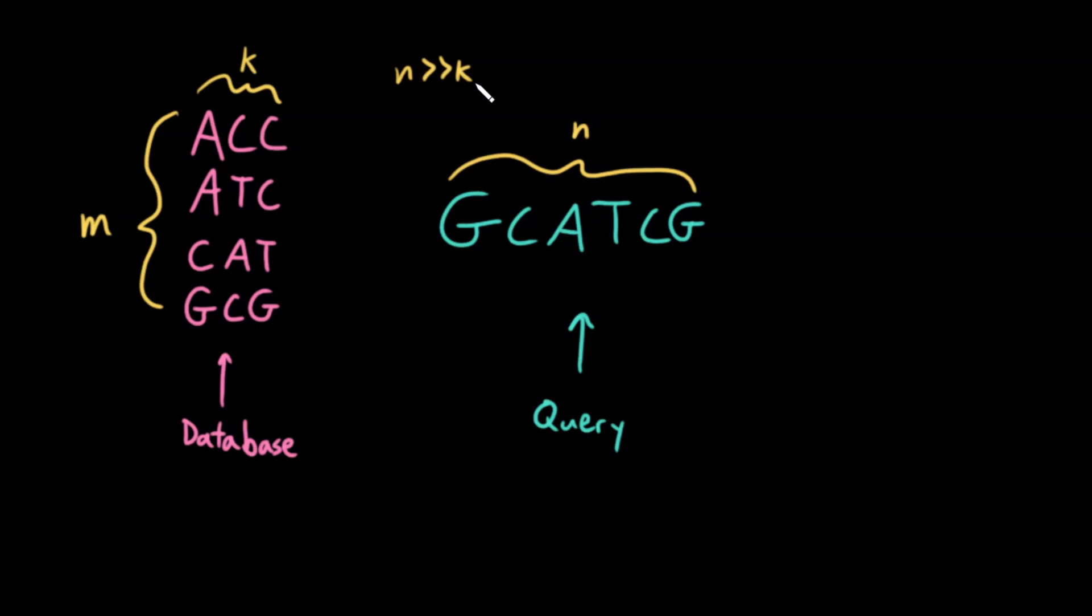A simple algorithm would be for each of my m sequences do a linear scan of my query where I try to find a match. So for example for ACC I would look at the first three letters of my query, nope that doesn't match, then I would shift over, nope that doesn't match, shift over, nope, shift to the end, that doesn't match either.